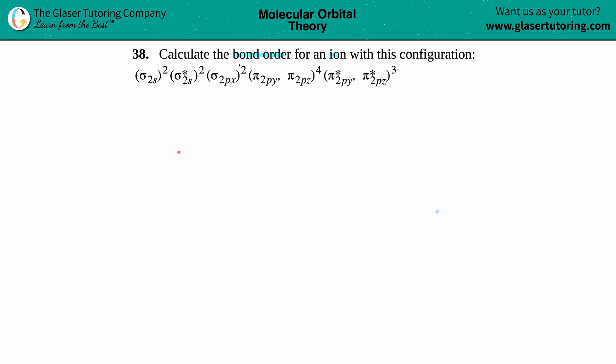This formula right here. The bond order for a molecular orbital—when you're talking about bond orders, it's always for molecular orbitals. It's always the number of bonding electrons that you see in your configuration minus the number of antibonding, and then just divide it by two.